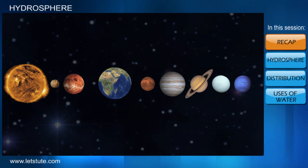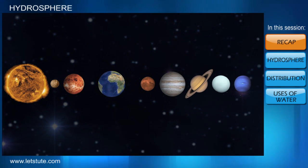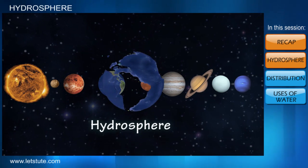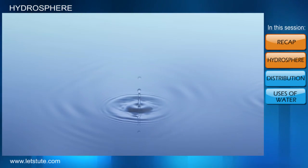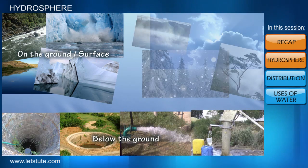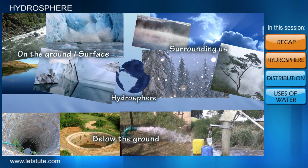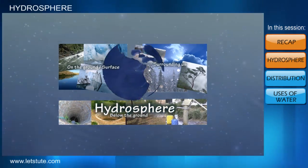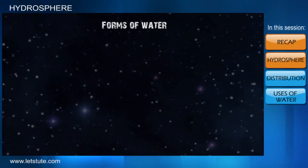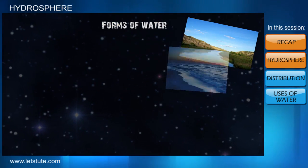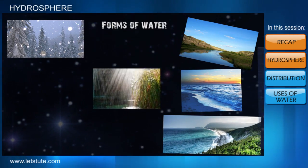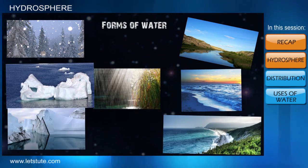Let's know some more things about this interesting feature of our Earth — that is, our hydrosphere. We all know that all the water on the surface, below the ground, and surrounding the Earth comes under the hydrosphere. We can also see water in different forms like in rivers, seas, oceans, snow, rain, glaciers, ice caps, etc.